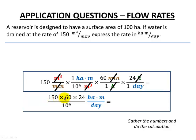There's the 150 times the 60 times the 24 all divided by 10 to the fourth, and that's our hectare meters per day. So our final answer to one decimal place is 21.6 hectare meters per day.